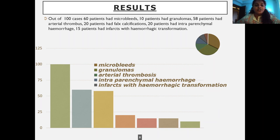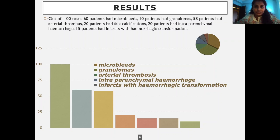The results from our 100 cases: 60 patients had microbleeds, 10 patients had granulomas, 58 patients had thrombus, 20 patients had calcifications, 20 patients had intra-parenchymal hemorrhage, and 15 patients had infarcts with hemorrhagic transformation. Due to phase and mask imaging, we were able to differentiate hemorrhage and calcification in all 100 patients.